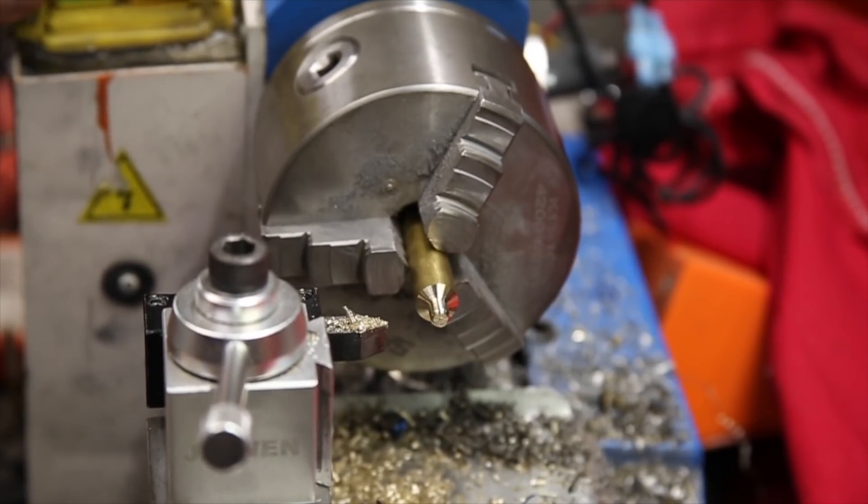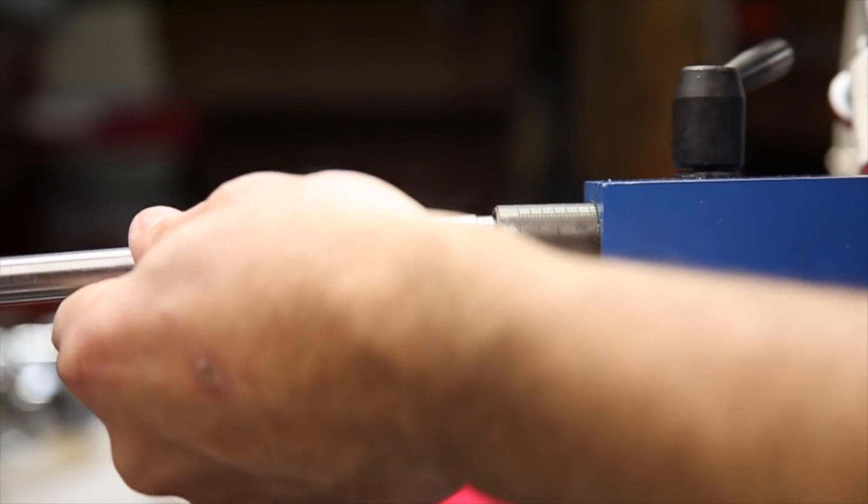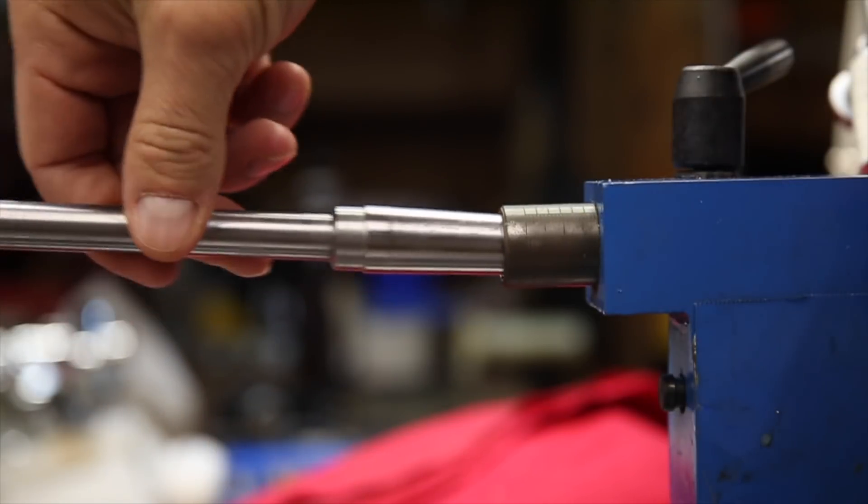Now that the small diameter is roughly 6mm, I can try the new tailstock die holder to put M6x1 threads on the part.